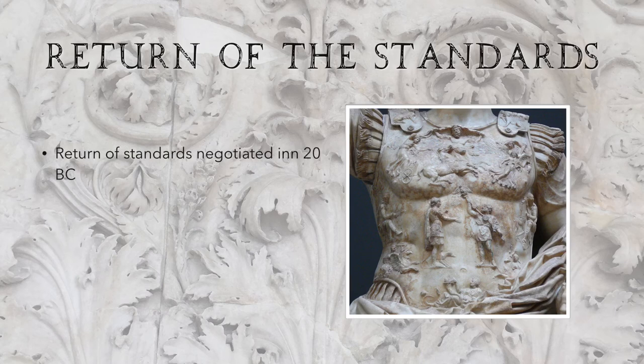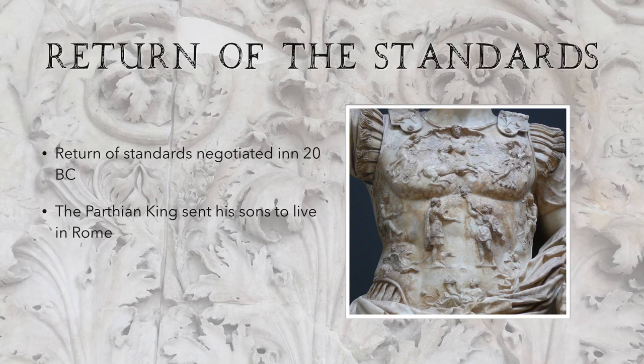In 20 BC, Augustus went along with his stepson Tiberius to the east and negotiated the return of the standards peacefully through diplomacy. The Parthian king sent his sons to live in Rome, which promoted peace between the two powers. Later, after that king died, Gaius was also sent to Parthia to ensure a continued Roman presence and maintain the peace between them.